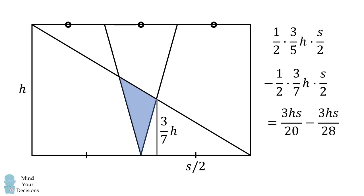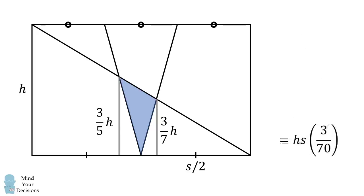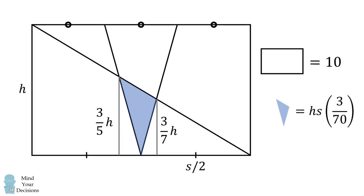We do some algebra and we get that the answer is equal to H times S times 3 over 70. Now we know one more fact: the area of the rectangle is equal to 10, and the area of the rectangle is equal to H times S. Therefore, we substitute in and we solve that the area of this triangle is equal to 3 over 7. And that's our answer.